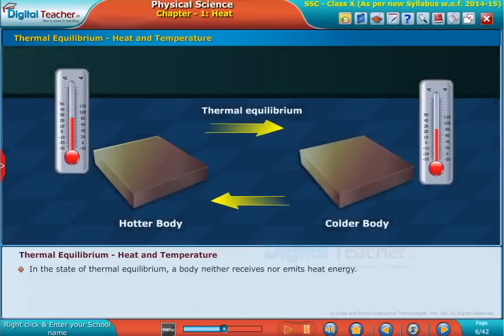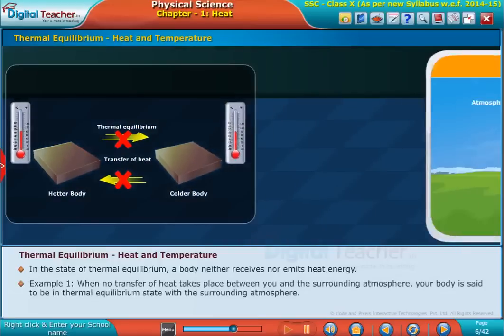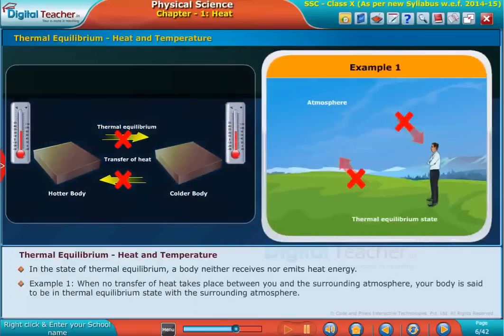In the state of thermal equilibrium, a body neither receives nor emits heat energy. Example 1: When no transfer of heat takes place between you and the surrounding atmosphere, your body is said to be in thermal equilibrium state with the surrounding atmosphere.